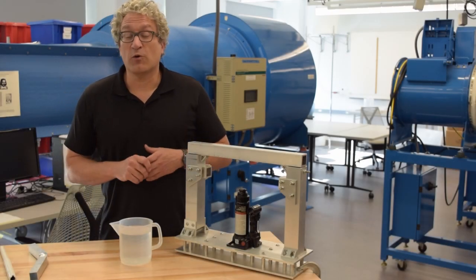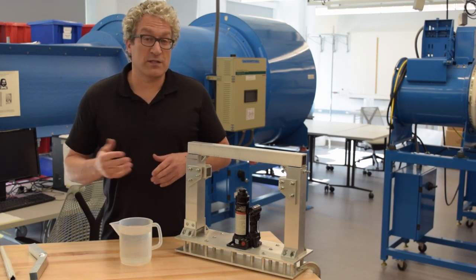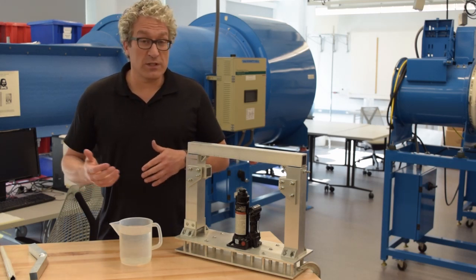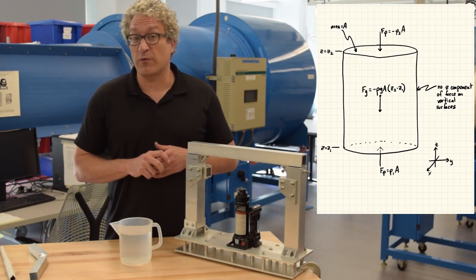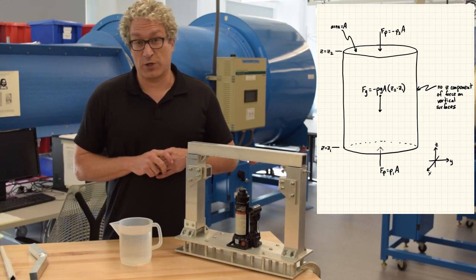So we derived the hydrostatic equation by performing this analysis on this control volume, balancing the gravitational forces and the pressure forces. And it's relatively straightforward because these are the only two forces that we need to consider and because the pressure acts isotropically.